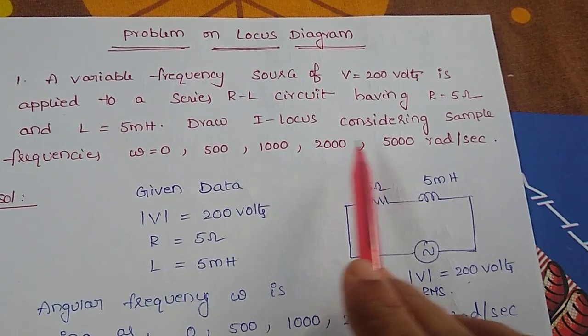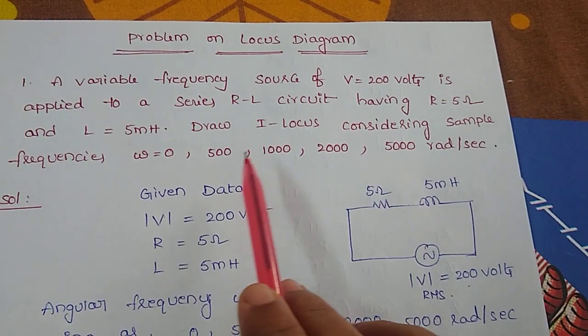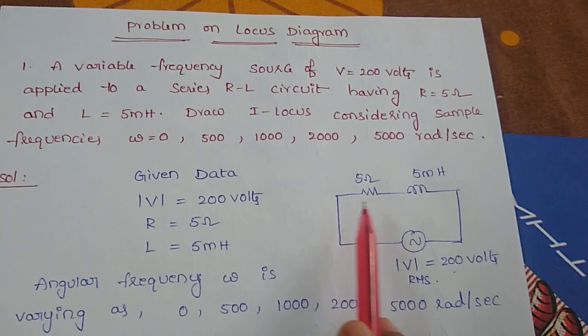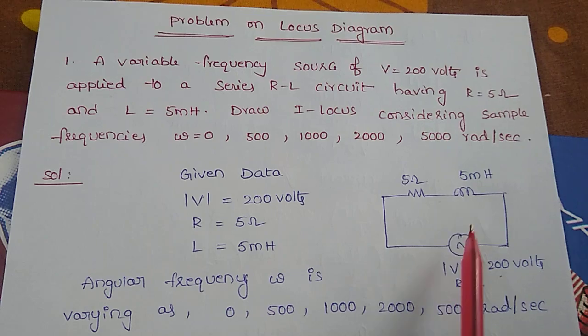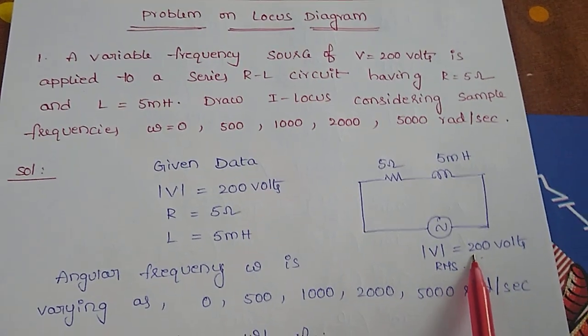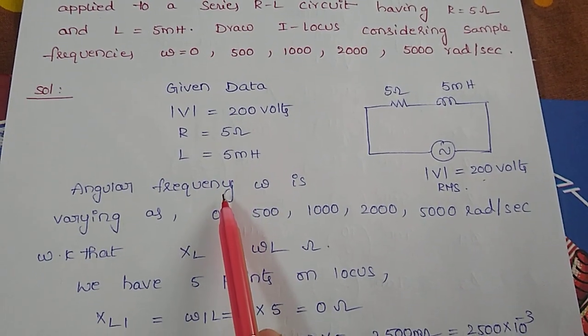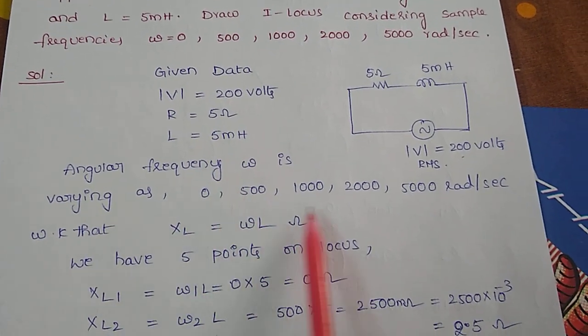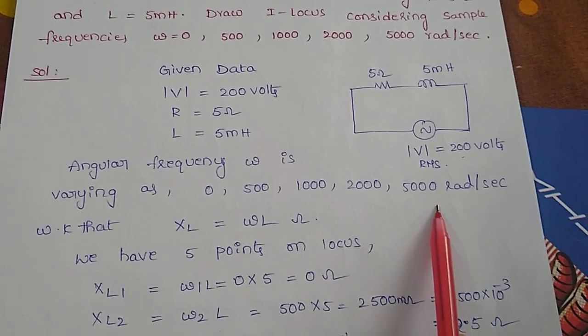We'll consider sample frequencies of 0, 500, 1000, 2000, 5000 radians per second. This is our RL series circuit with resistance of 5 ohms and inductance of 5 millihenry, both connected in series with a voltage of 200 volts. I have taken the data of R, L, and steps of frequencies varying from 0 to 5000 angular frequency.